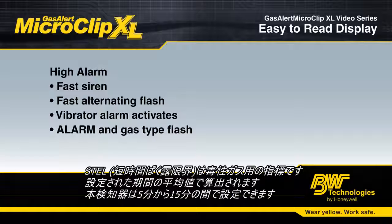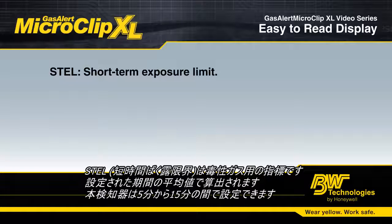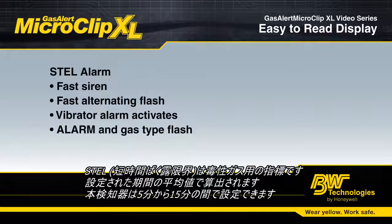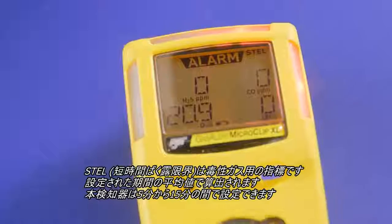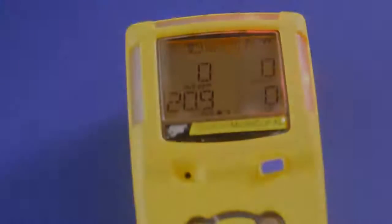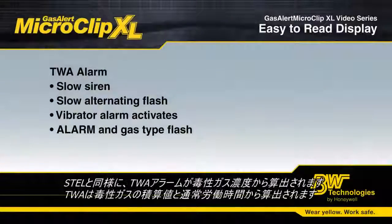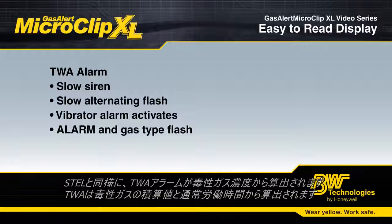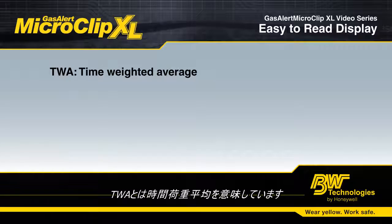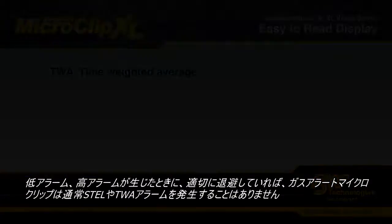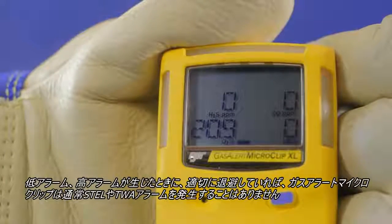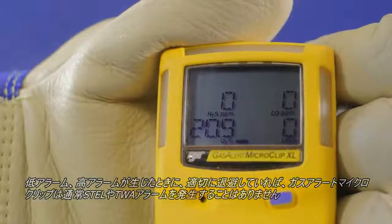STEL readings are calculated only for toxic gases. STEL stands for Short Term Exposure Limit, basically measuring your average exposure over a preset time period. This floating window can be set from 5 to 15 minutes. Like STEL, TWA alarms are also calculated for toxic gases. A TWA alarm signals a cumulative exposure over time, typically an 8-hour period. TWA stands for Time Weighted Average. If you are taking proper action and evacuating any time a low or high alarm is sounded, your GasAlert Micro Clip XL should not go into STEL or TWA alarm.